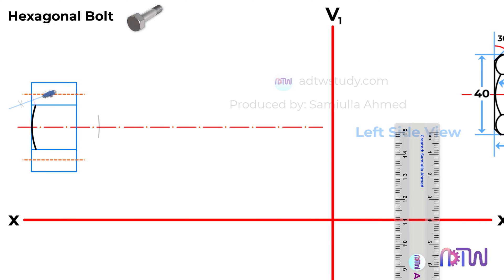Position the compass at this point, adjust it to the length as shown, and draw the arc. Next, without altering the compass length, place it on this point and cut the arc. Utilize this point to draw the chamfer, completing the head portion of the bolt.